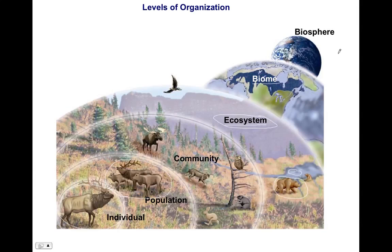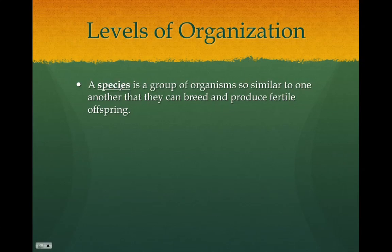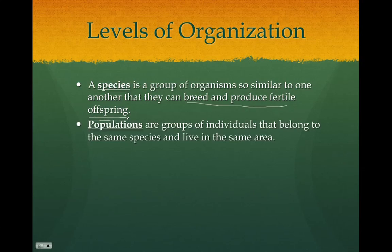A species is a group of organisms so similar to one another that they can breed and produce fertile offspring. For example, a liger — produced by crossing a tiger and a lion — is not a new species because the offspring are not fertile.